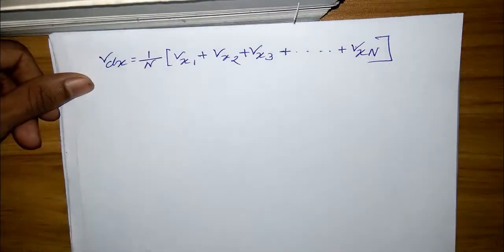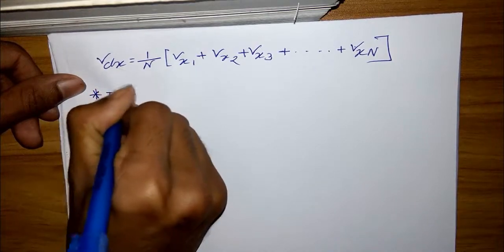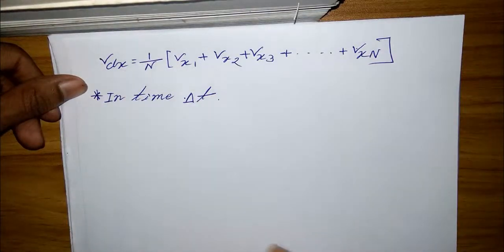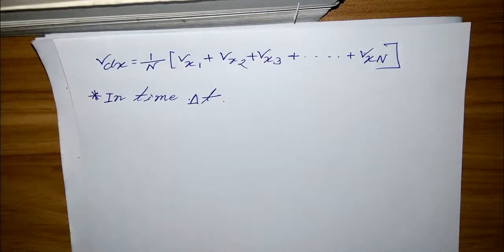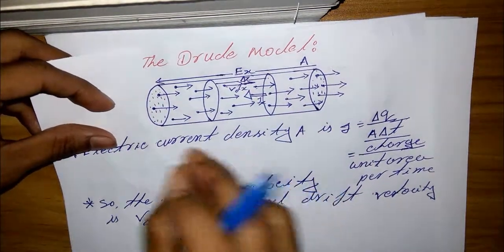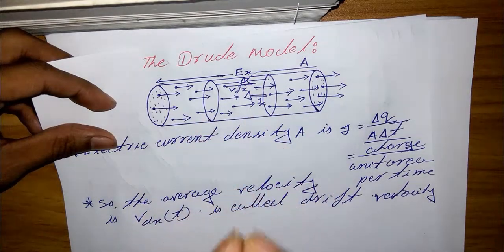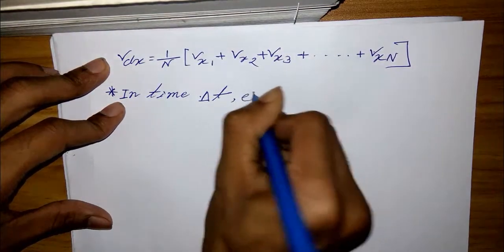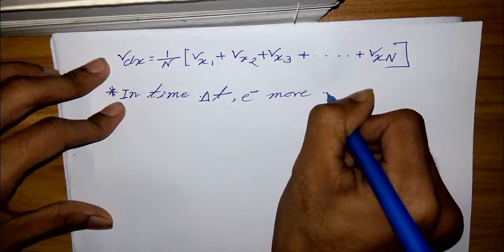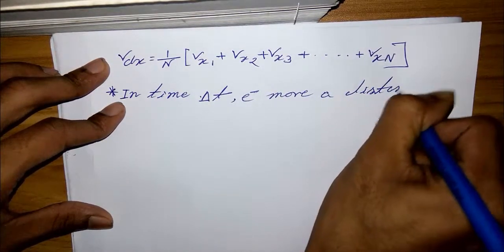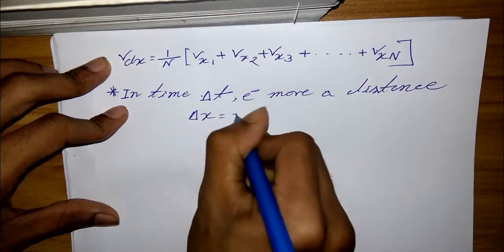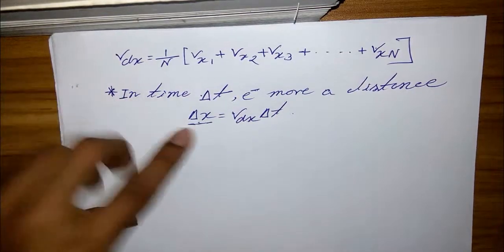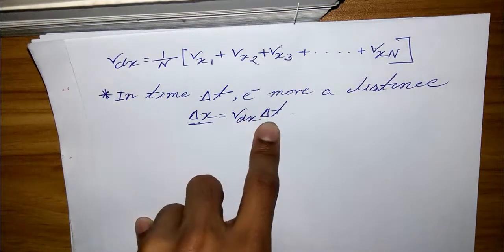Then in time del t, electron moves a distance del x. Here I indicate that del x, electron moves a distance del x. So that the electron moves a distance del x equal v_dx del t, that means the direction equals velocity multiplied with time.